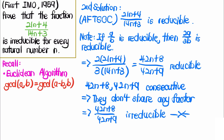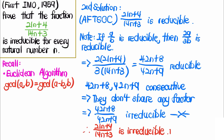Therefore, this contradiction shows that our initial assumption was false, proving that the original fraction is irreducible. We are done with the second solution.